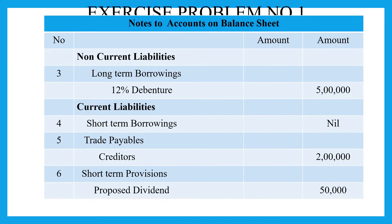We have three subheadings. Assets are the subheadings. The first one is non-current liabilities, and this means non-current liabilities and current liabilities. In this case, put in long-term borrowings. Long-term borrowings is a subheading under non-current liabilities.